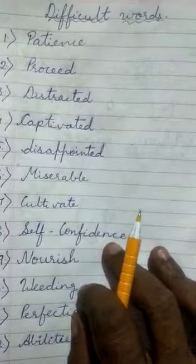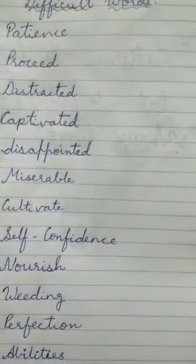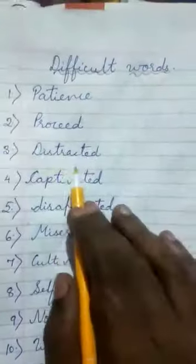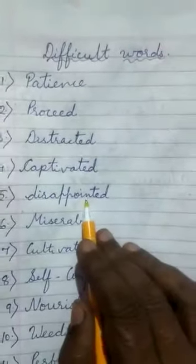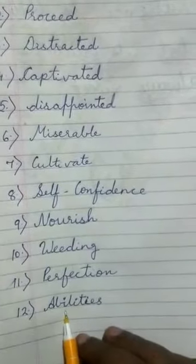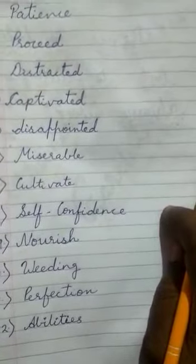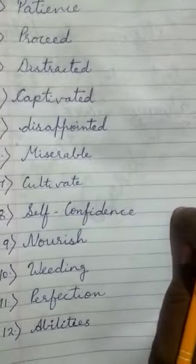First we have to see the pronunciation and meaning in Hindi so that we can understand properly. The difficult words are: patience, proceed, distracted, captivate, disappointed, miserable, cultivate, self-confidence, nourish, bleeding, perfection, ability. I have pronounced all the words. You will repeat after my explanation to better learn the pronunciation of each word.